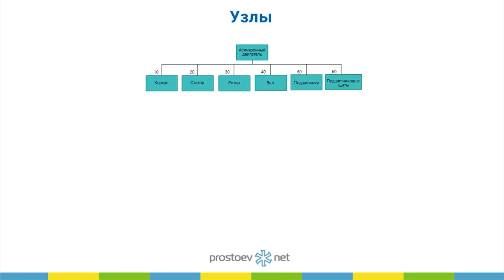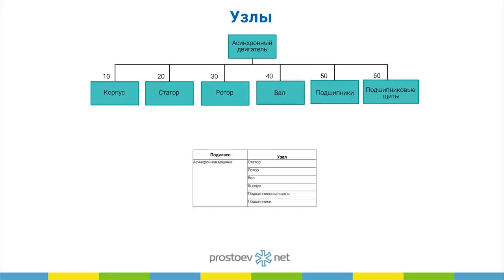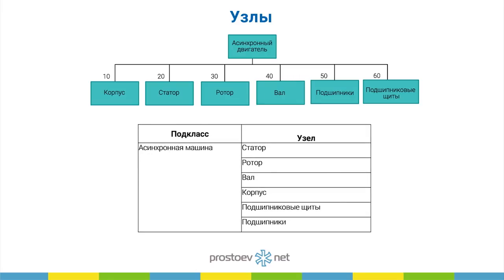По поводу узлов — мы сейчас говорим про электрооборудование. То есть те же самые принципы: основные узлы, которые отказывают в электродвигателе, например, они должны быть в базе данных как отдельные справочные элементы, с тем чтобы это потом использовать для анализа.